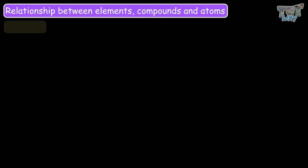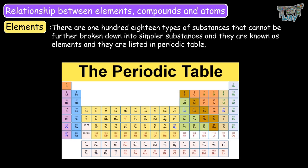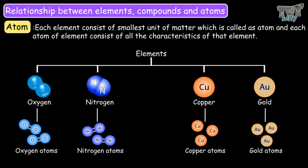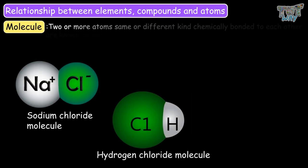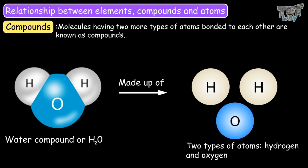Now let's learn the relationship between elements, compounds, and atoms. There are 118 types of substances that cannot be further broken down into simpler substances — they are known as elements, and they are listed in the periodic table. Each element consists of the smallest unit of matter, which is called the atom, and each atom of an element consists of all the characteristics of that element. Two or more atoms of the same or different kind chemically bonded to each other are known as molecules. Molecules that have two or more types of atoms bonded to each other are known as compounds.